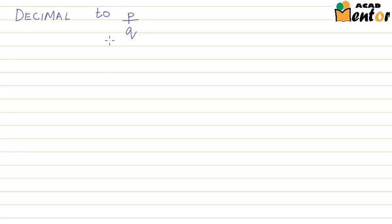In the previous video, we saw that the terminating decimals and the non-terminating but repeating decimals are basically nothing but rational numbers.